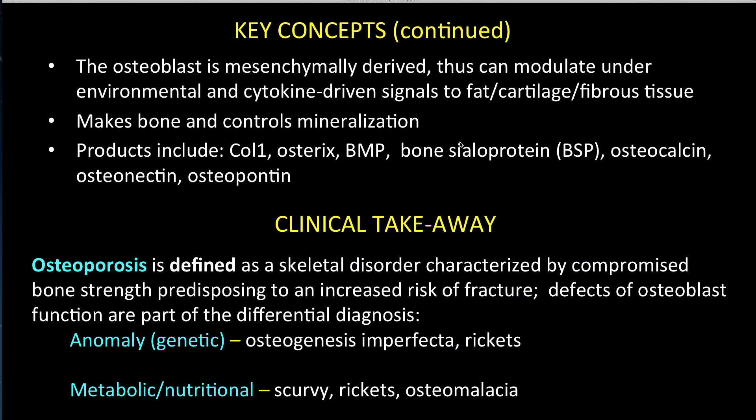In this video, you have seen osteoblast function as shown in early woven bone formation. The clinical takeaway is that defects of osteoblast function are part of the differential diagnosis of osteoporosis, one of the most prevalent problems that we face. The osteoblast expresses collagen in multiple biochemical steps that are genetically pre-programmed. Defective genes underlie osteogenesis imperfecta and X-linked dominant hypophosphatemic rickets. Metabolic disorders related to nutritional deficiency underlie the pathophysiology of scurvy, rickets, and osteomalacia. This completes the video on osteoblast function. Knowledge of the osteoblast is integral to many of the concepts that follow.